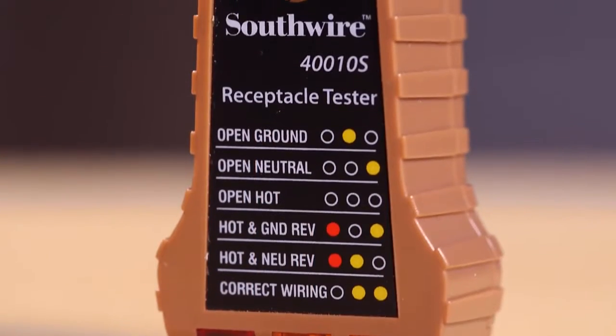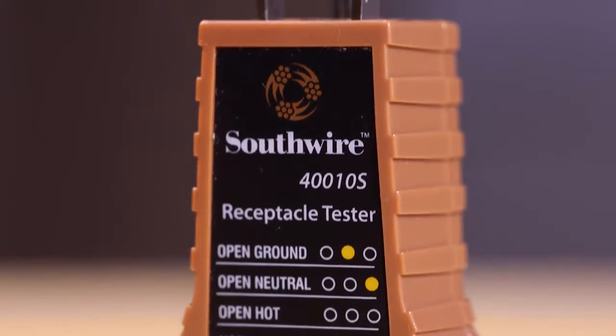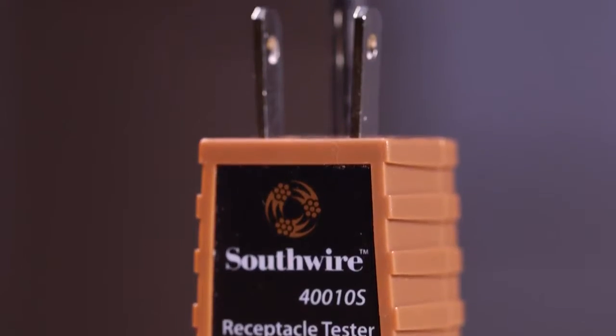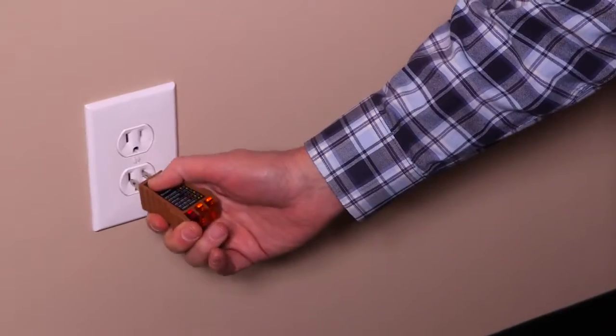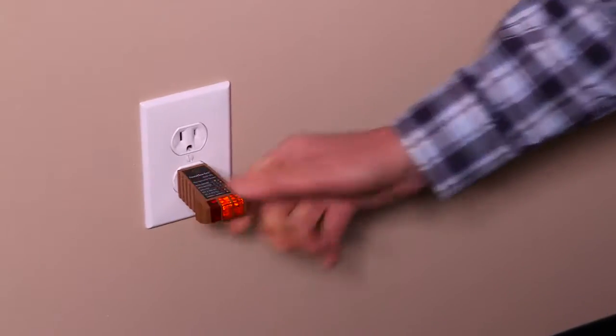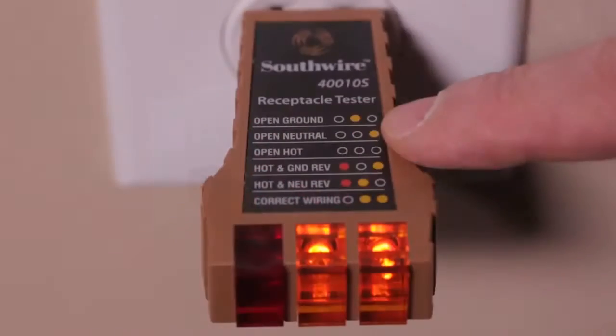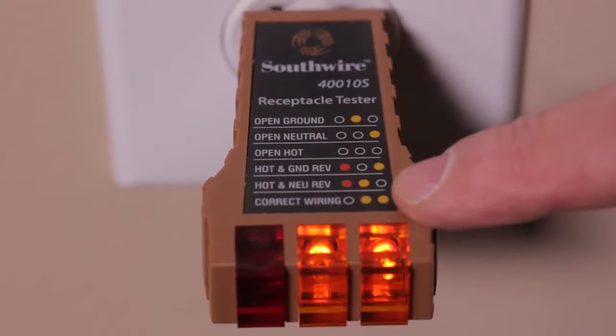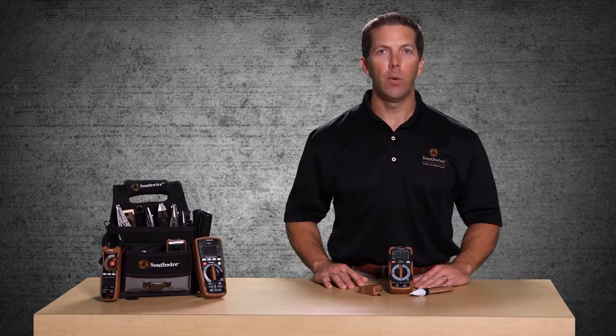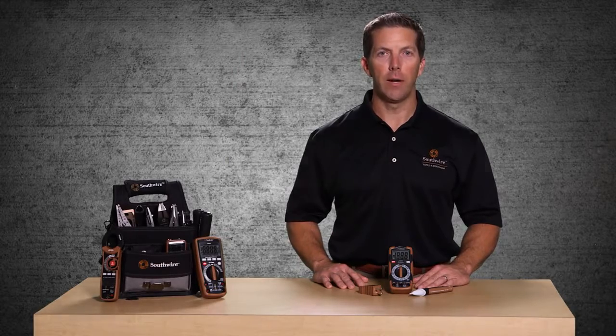The 40010S Receptacle Tester checks wiring on outlets. Just plug it in and compare the lit indicator lights to the diagnostic chart printed on the tester. The 40010S will identify properly wired outlets and outlets with missed connections and open grounds.